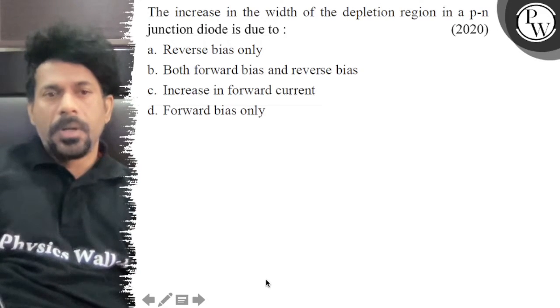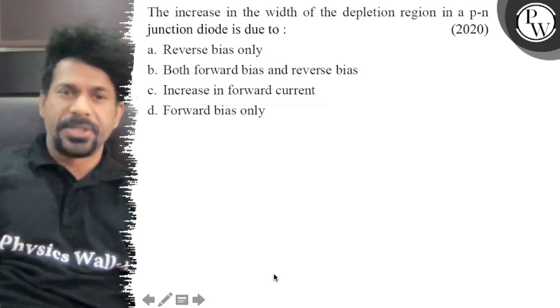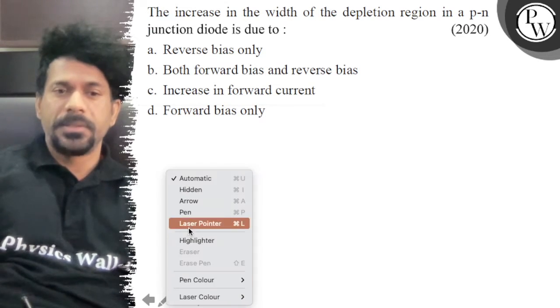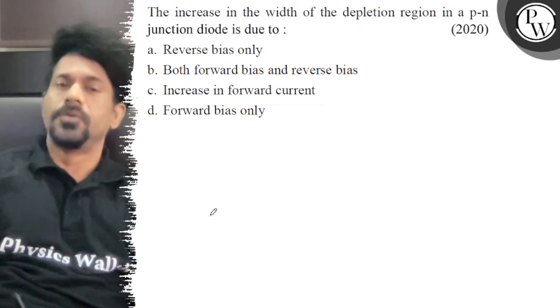Let's see the question: the increase in the width of the depletion region in a p-n junction diode is due to what? This is due to reverse bias.